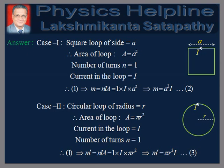And in the second case, we have a circular loop as shown in the figure. Radius of the circular loop is equal to R. Therefore, area of the loop A = πR². The same current I flows through it. The number of turns in this case is also equal to 1. Let the dipole moment of this loop be M dash. Therefore, equation 1 gives M dash = πR²I.